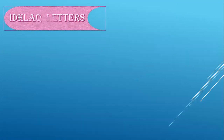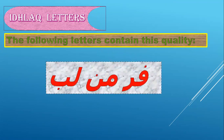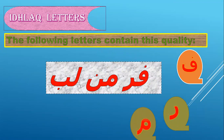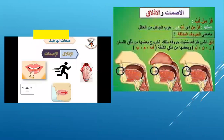That means you pronounce islaq letters in an easy way, not difficult. The following letters contain this quality, compounded in the sentence: letter fa, letter ra, letter meem, letter noon, letter lam, and letter ba. Why these letters only? Because they are the islaq letters. If you want to know the reason, please look at the pictures and notice that.